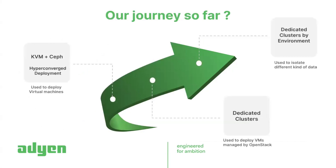So, our journey so far. At the beginning, we started with a local KVM plus Ceph deployment — a kind of hyperconverged function. That works well for a small workload, and is really fine. We can do whatever we want, but when your workload starts increasing, then the problems start to come.